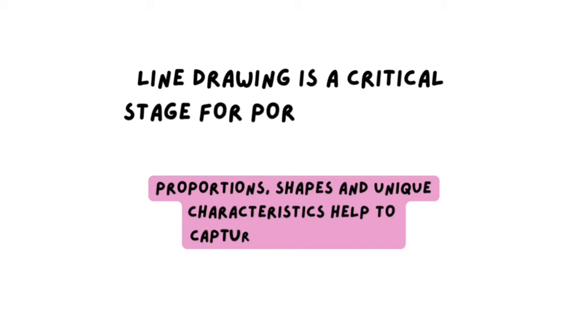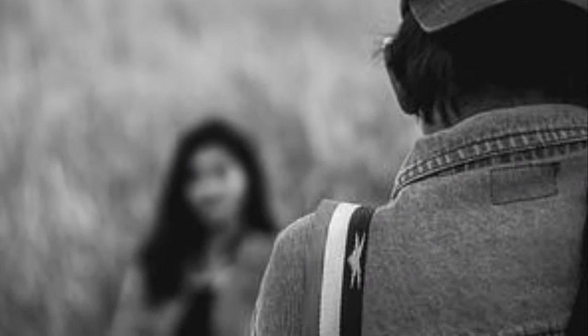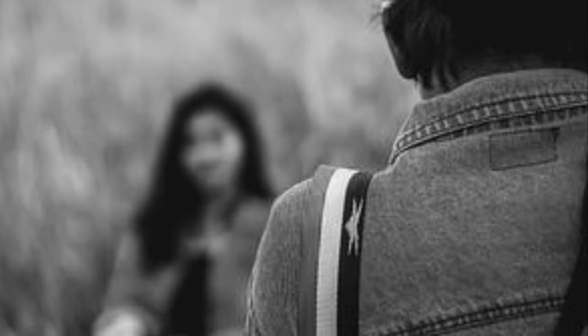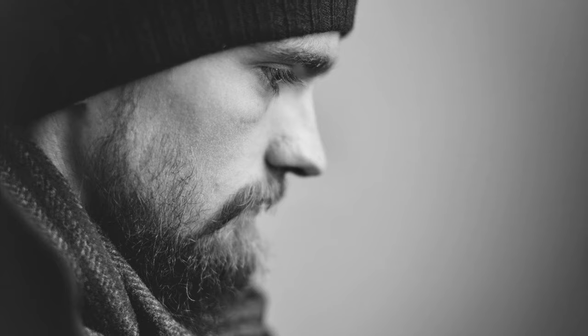The first thing I want to talk about is blur. When you're drawing a portrait with graphite the very first thing you need to do is a line drawing. This is probably the most important stage and the most critical step in the process. Here you need to get the proportions right and capture the characteristics and uniqueness of the face — that's what really sets you up for getting a good likeness of the model.